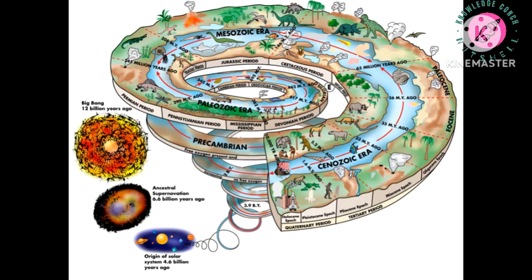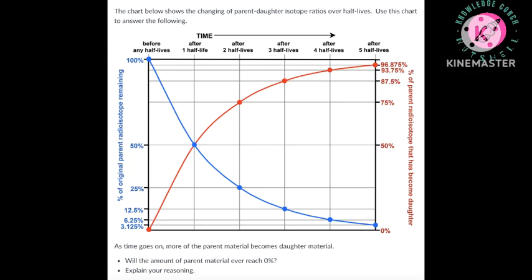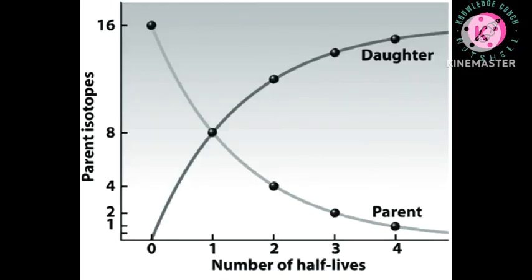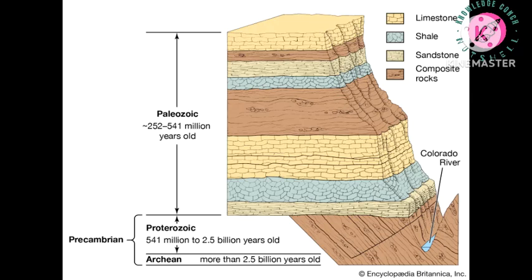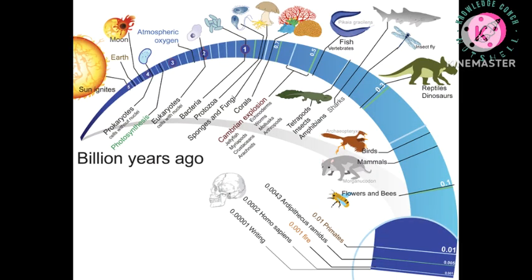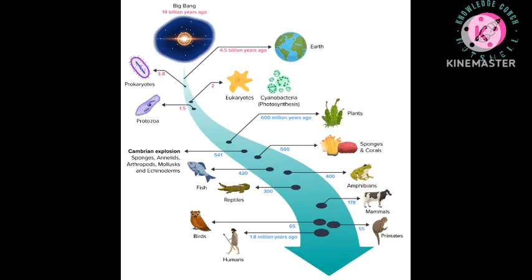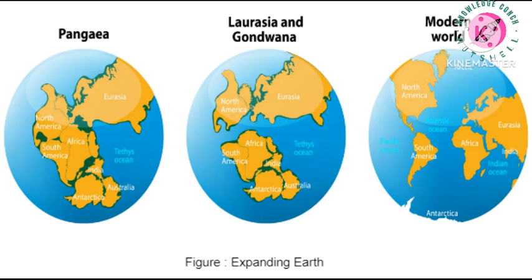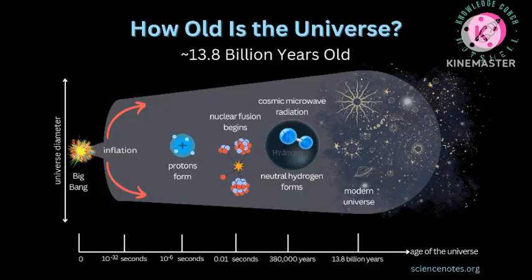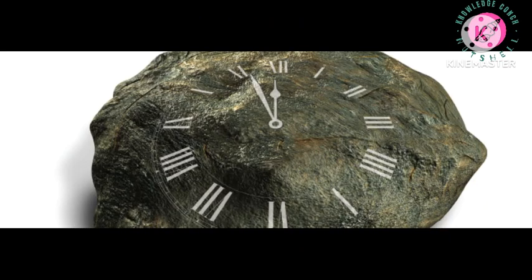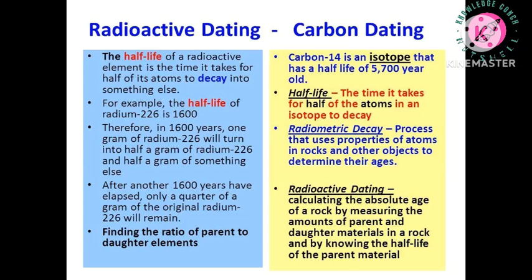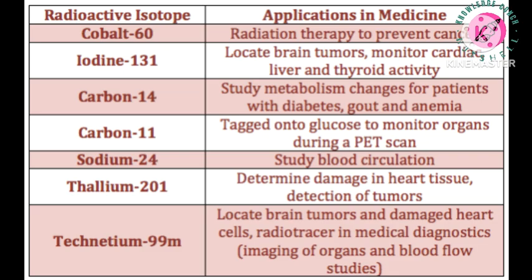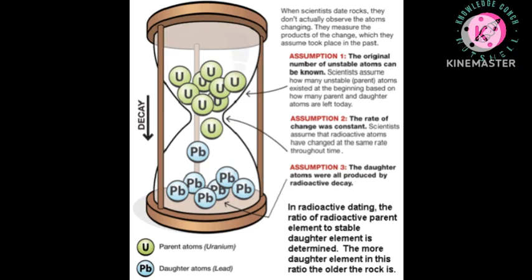By analyzing the ratios of parent and daughter isotopes in a sample, scientists can unveil the age of Earth's history. This method has been pivotal in understanding the evolution of life, the formation of continents, and even the age of the universe. As powerful as radioactive dating is, it's not without limitations. The precision of the method depends on various factors, and scientists continually refine techniques to enhance accuracy.